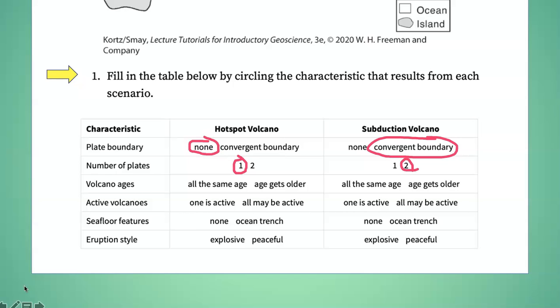Now here's where you can really find some clues about the origin. The age of the volcanoes. In a hot spot, the age changes along the chain of the volcanoes, whereas in a subduction zone, they're all the same age because they're all being produced at the same time.